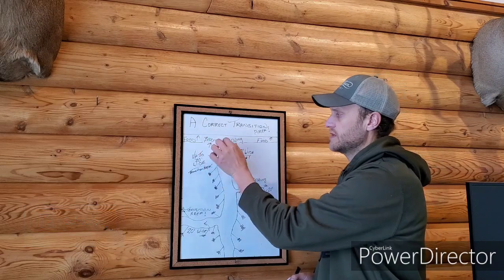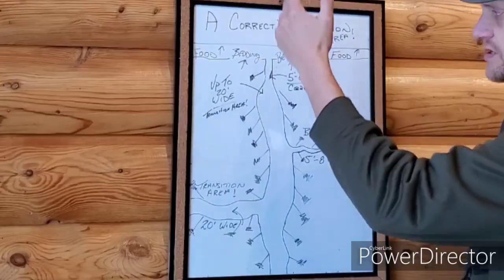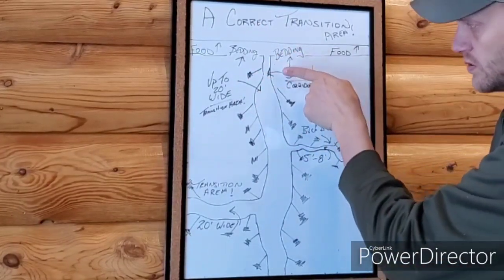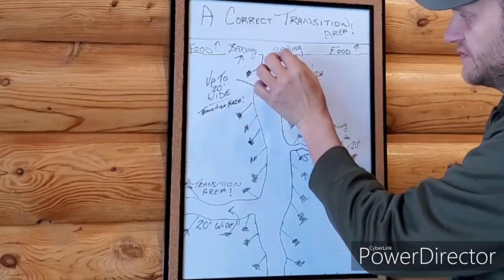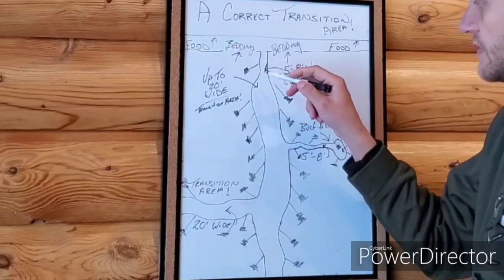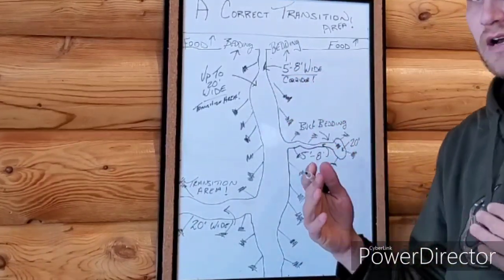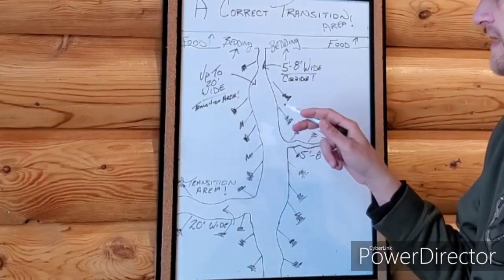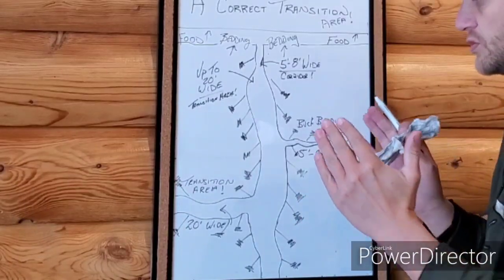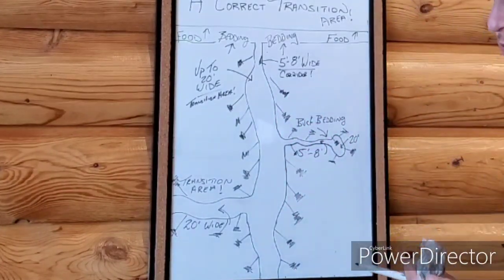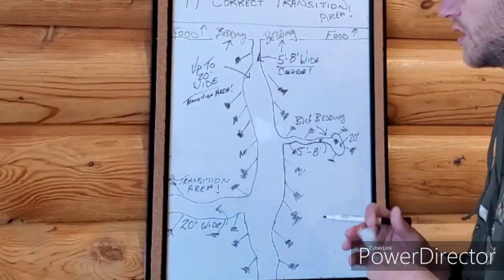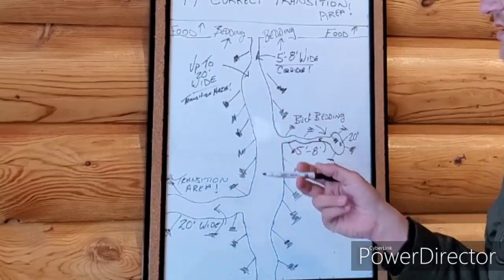What I do is start from the bedding area — or let's say the food and bedding area with food to the north. You walk this system, come out of your corridor at five to eight feet wide, and your hub design is up at the top. You come in and start putting these trees on a 45 to the outside of the transition area. You can see what that does: it creates a natural draw pulling you toward the center, without making it too tight.